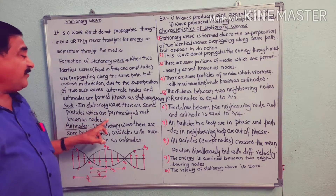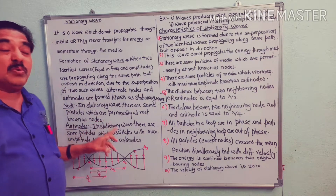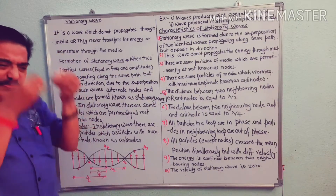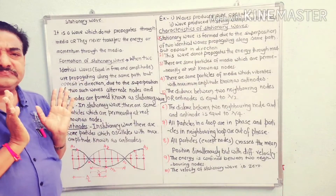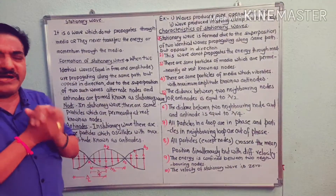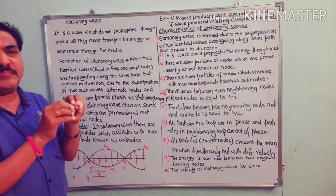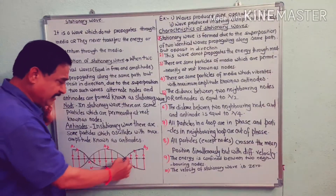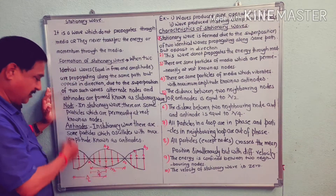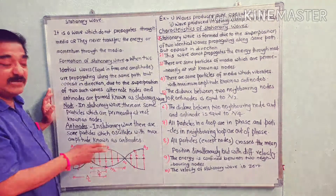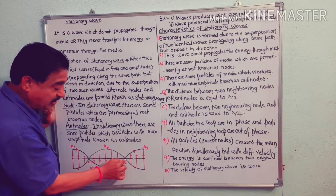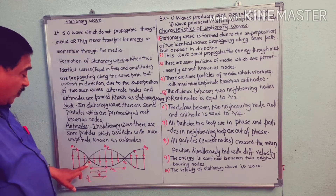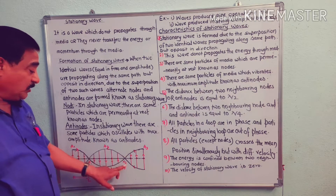In a stationary wave, there are some particles of the media which are permanently at rest, known as nodes. For example, here in a stationary wave, the points permanently at rest are node 1 (N1) and node 2 (N2).